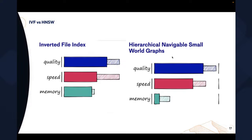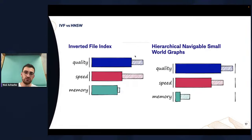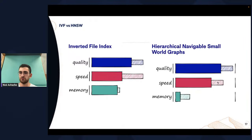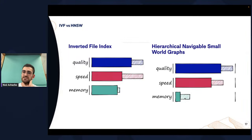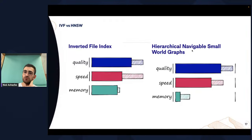This graph from Pinecone shows the difference between IVF and HNSW. The bigger the bars, the better. HNSW has better quality search and better speed — the dashed line shows small differences when you change hyperparameters. However, HNSW takes more memory, so it's not as good as IVF when considering memory. But memory is usually not the most important factor, so HNSW tends to be preferred.